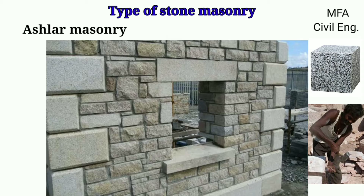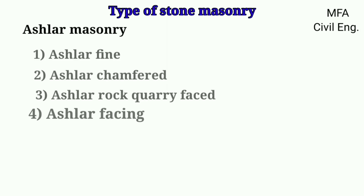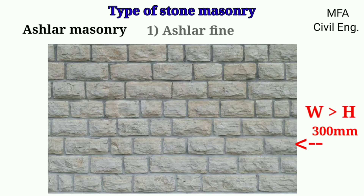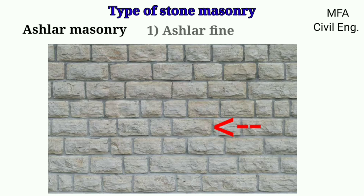Depending on the nature of dressing, ashlar masonry can be divided into various categories: ashlar fine, ashlar chamfer, ashlar rock quarry face, and ashlar facing. In ashlar fine masonry, the stones are dressed perfectly so that they conform to the desired pattern. The size of stones laid in regular courses should not be less than 300 mm in height. The width of the stone should not be less than the height of the course, and the length of a stone should not be more than two times the height of the course. Stones are laid in a header and stretcher pattern alternately. All vertical joints in two adjacent courses should be staggered, and the maximum thickness of a joint should be 3 mm.